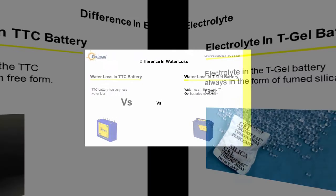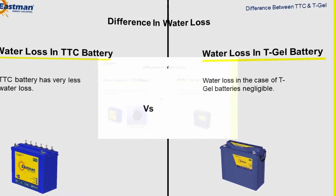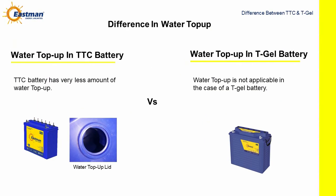Difference in water loss. TTC battery has very less water loss. Water loss in the case of T-Gel battery is negligible. Difference in water top up. TTC battery has a very small amount of water top up required. Water top up is not applicable in the case of a T-Gel battery.